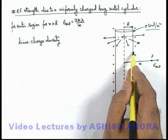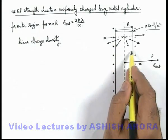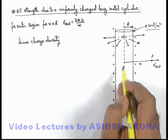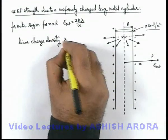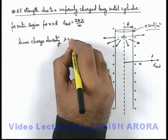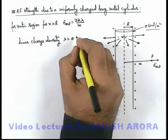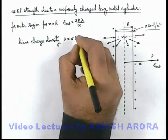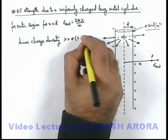The circumference of this unit length will be 2 pi R and length is 1 meter. In that situation linear charge density lambda can be given as sigma, which is a surface charge density multiplied by the area of the unit length of cylinder that is 1 into 2 pi R.